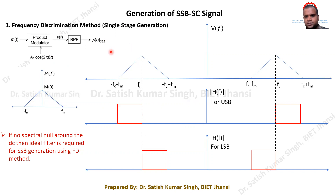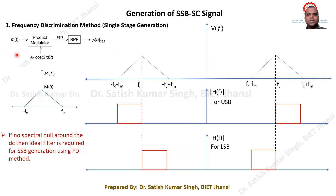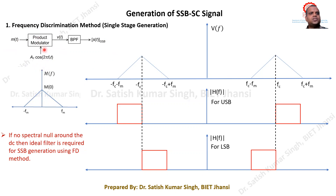First, understand this scheme. To generate the DSB-SC signal, we take the message signal and multiply it with the appropriate carrier signal. This product is then passed through an appropriate band-pass filter to select one of the sidebands.